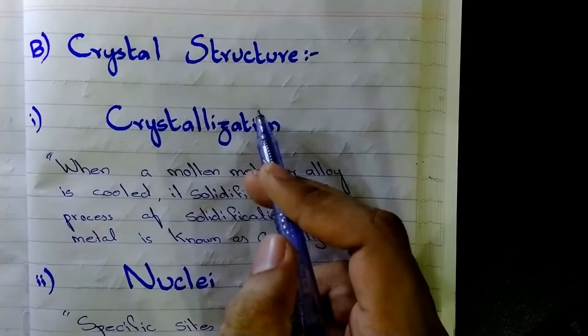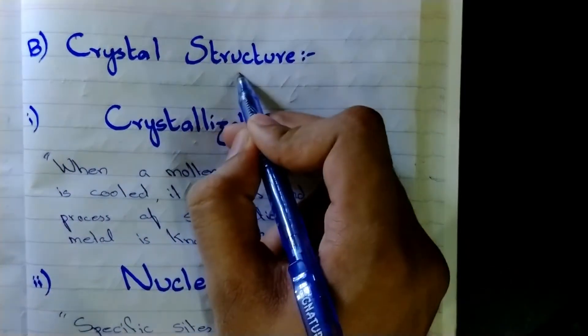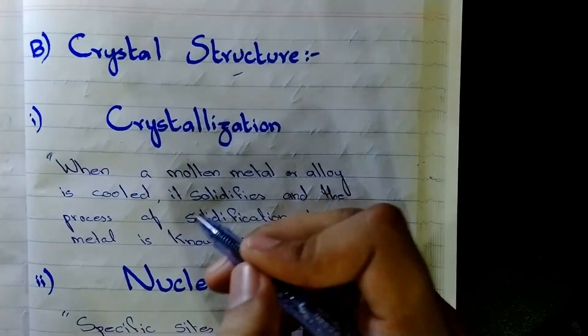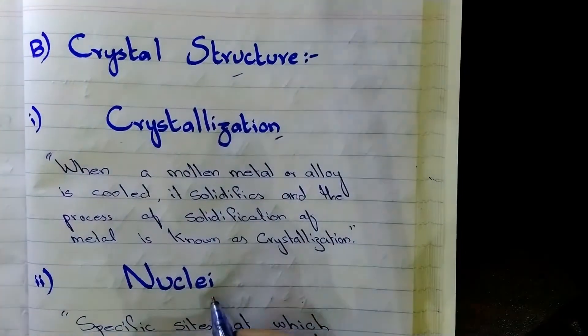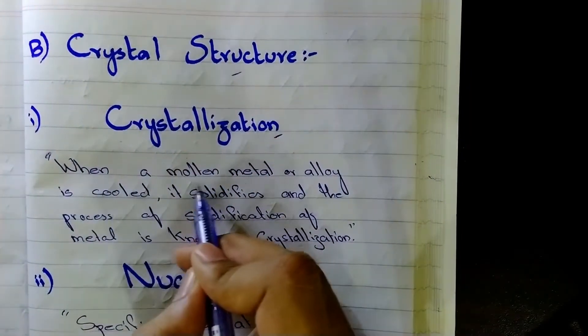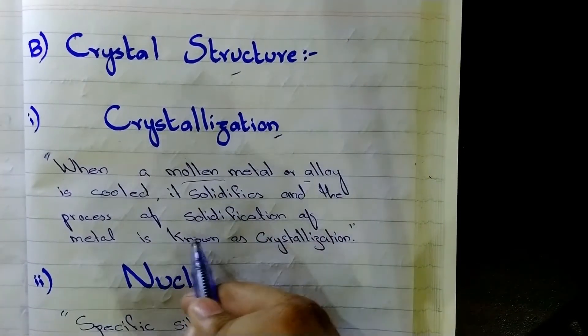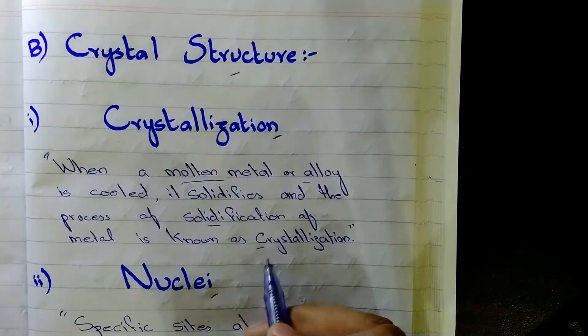Now, the crystal structure of metals. Before discussing about the crystal structure of metals, I want you guys to know about two important terms that are the crystallization and the nuclei. So, what is crystallization? Basically, when a molten metal or alloy is cooled, it solidifies. And the process of solidification of metal is known as crystallization.